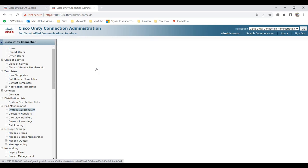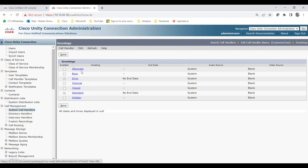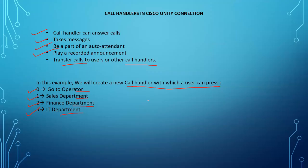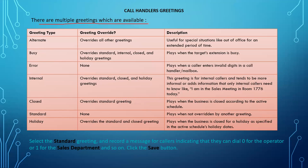Now let's look at Greetings. Click on the Greeting tab and you'll see six or seven greetings: Alternate, Busy, Error, Internal, Closed, Standard, and Holiday. Alternate has the highest priority — it overwrites all other greetings and is useful for special situations like extended out-of-office. Busy overwrites Standard, Internal, Closed, and Holiday greetings, and plays when the target's extension is busy.